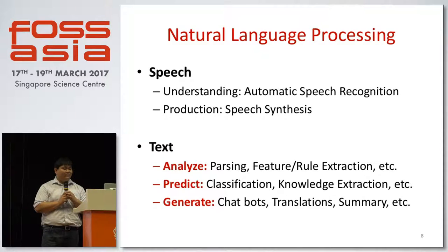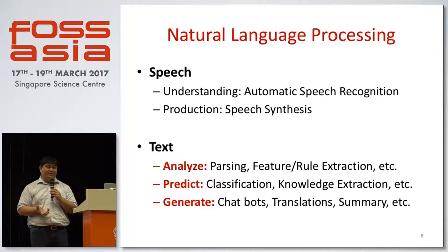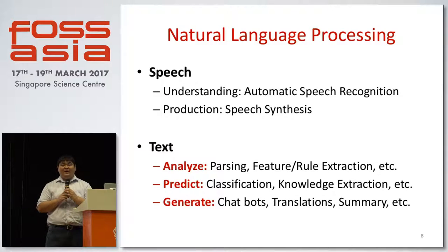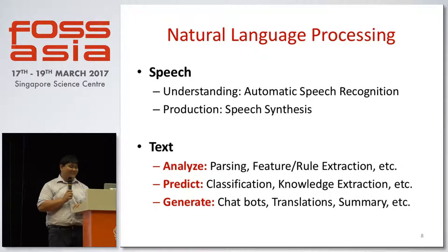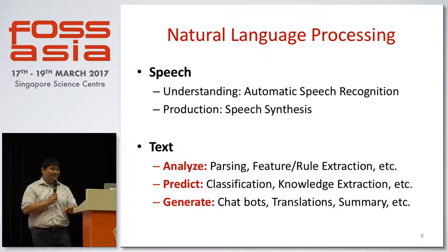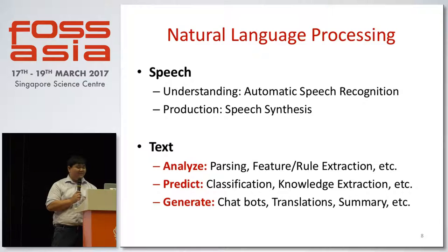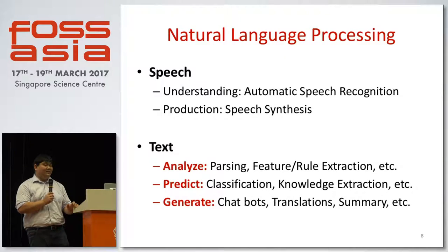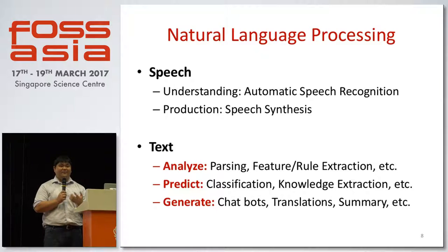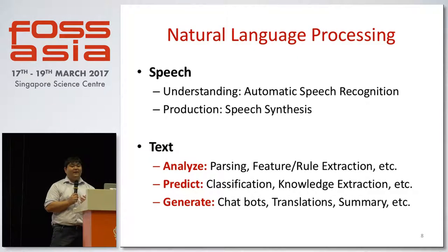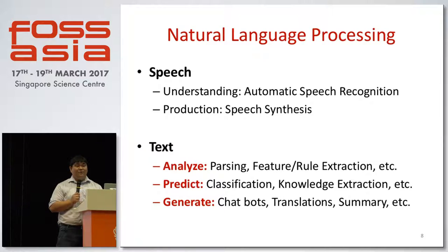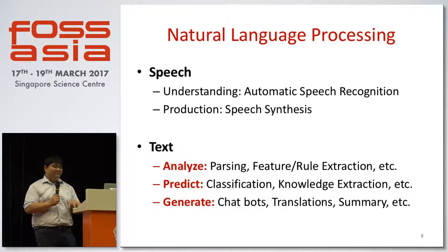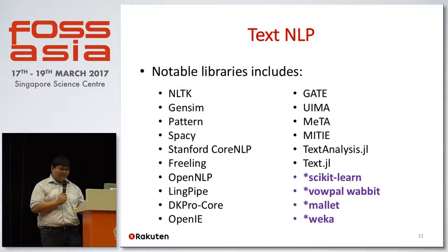There are two main mediums of language: speech and text. Under speech NLP we have understanding and production of speech — I'm not an expert there so I won't go into it. I'm more towards text analysis, where there are three main things: analysis of text, prediction of tasks like sentiment classification, knowledge extraction to understand what words represent which attributes, and generation, which is what we experience in chatbots, translation, and summarization.